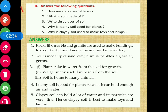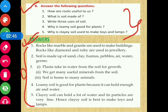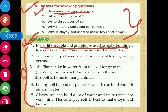Moving on to Section B — answer the following questions. Question number one: how are rocks useful to us? Rocks like marble and granite are used to make buildings. Precious rocks such as diamonds and rubies are used in jewelry making. These are the different ways rocks are useful to us.